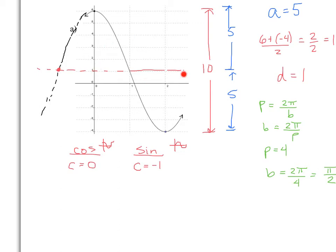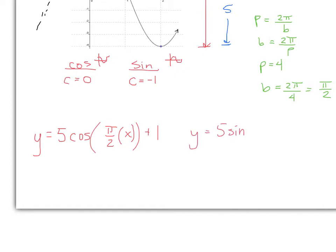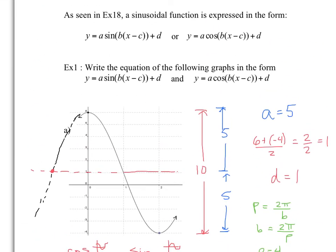So we can write our two equations. For cosine: y equals 5 cos(π/2 · x) + 1, since C is 0 and D is 1. For sine: y equals 5 sin(π/2 · (x + 1)) + 1. Notice the plus 1 inside means we moved 1 to the left, which is why C equals negative 1. Plugging in: x minus negative 1 becomes x plus 1. Those are your two formulas.